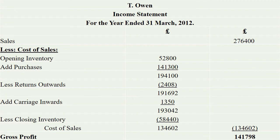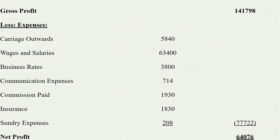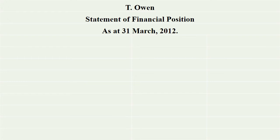We are going to make a statement of net profit. As we are looking at the date, we will have the owner name, and then the statement of financial position, with the date as at 31st March 2012.